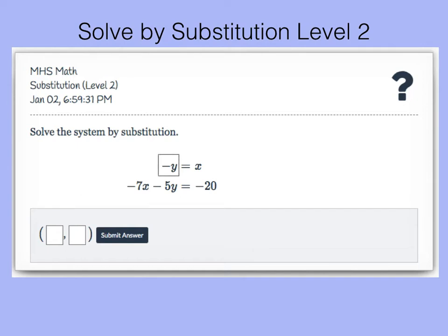So what we're going to do is we're going to substitute that expression negative y in place of x in the second equation. And we're going to write negative 7 times negative y minus 5y equals negative 20. Notice we have substituted x for the value that it was given negative y.